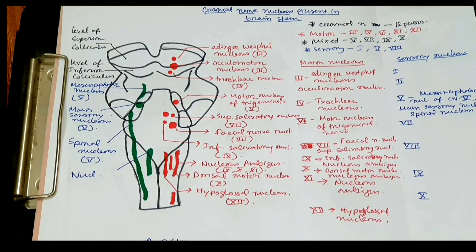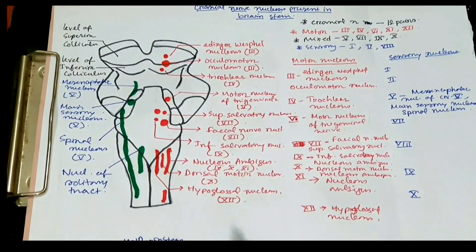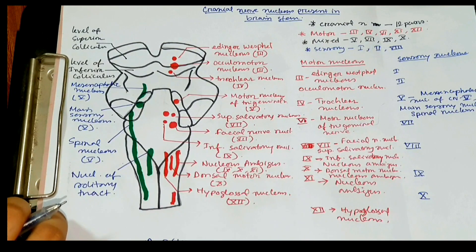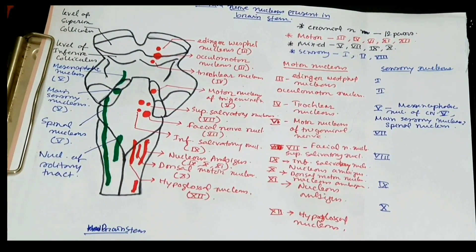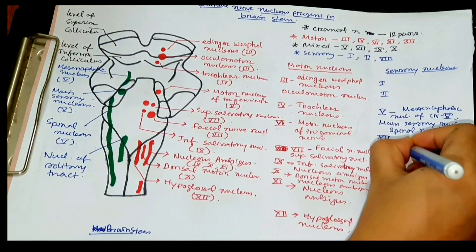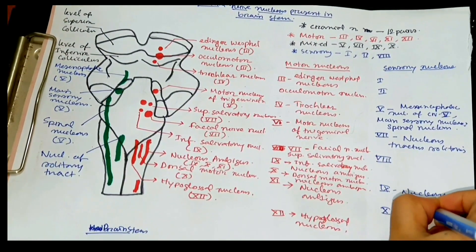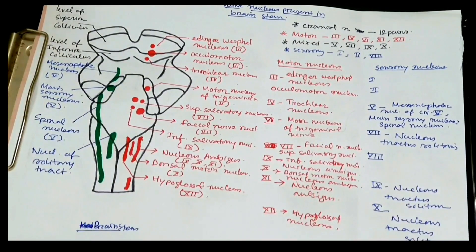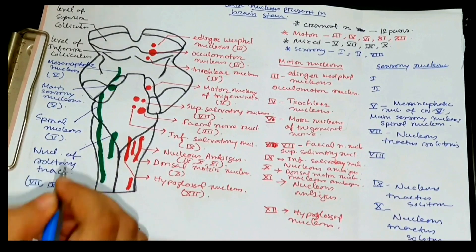Another sensory nucleus that lies in the medulla is the nucleus of the solitary tract, or nucleus tractus solitarius. It is the sensory nucleus of cranial nerves seven, nine, and ten.